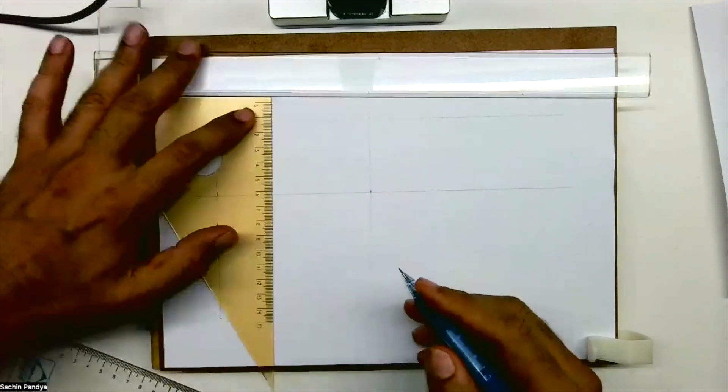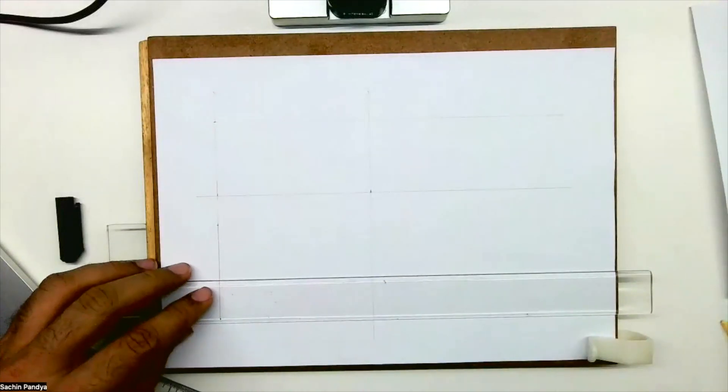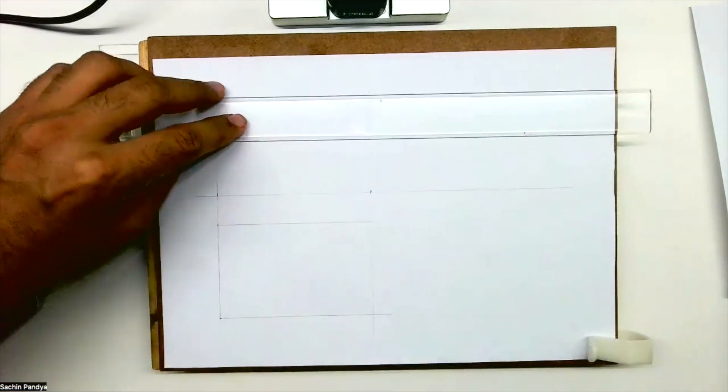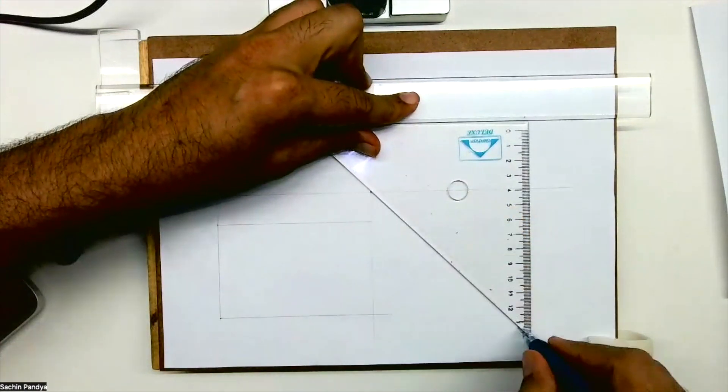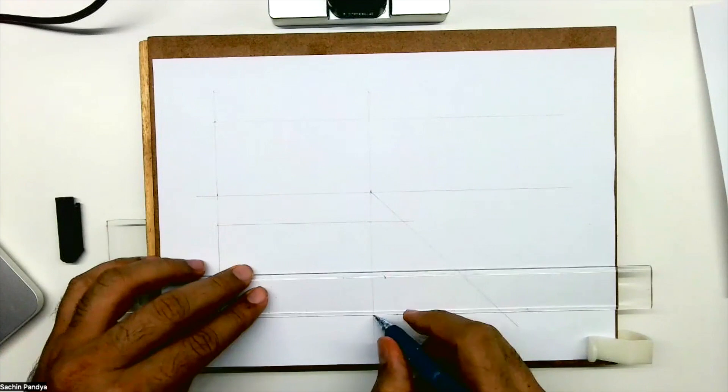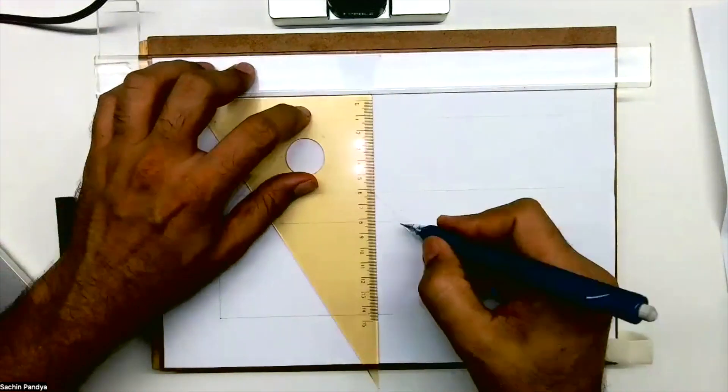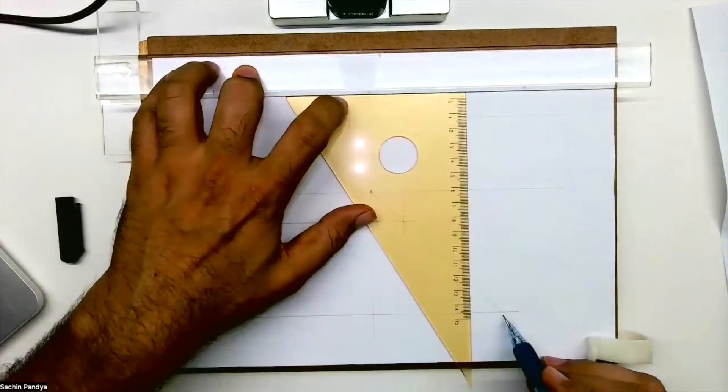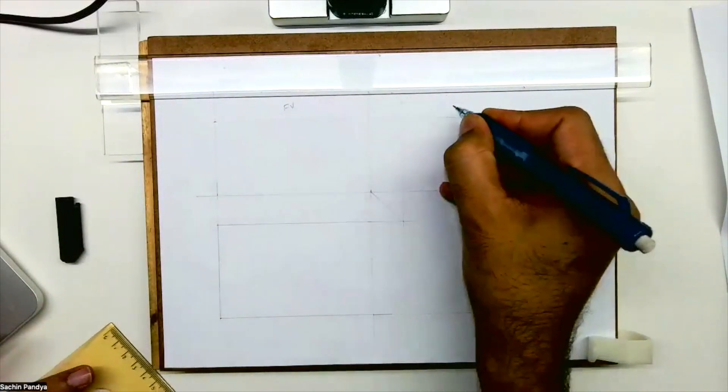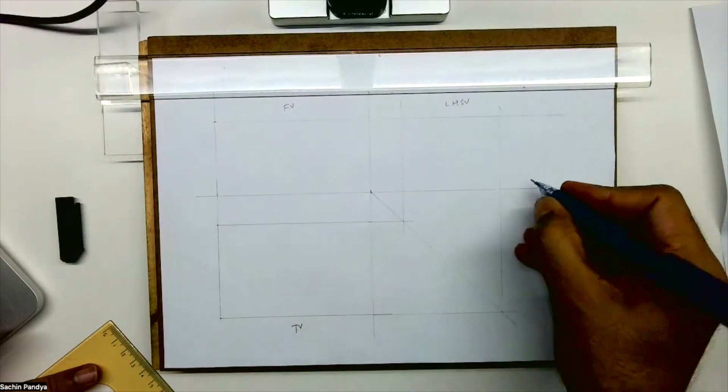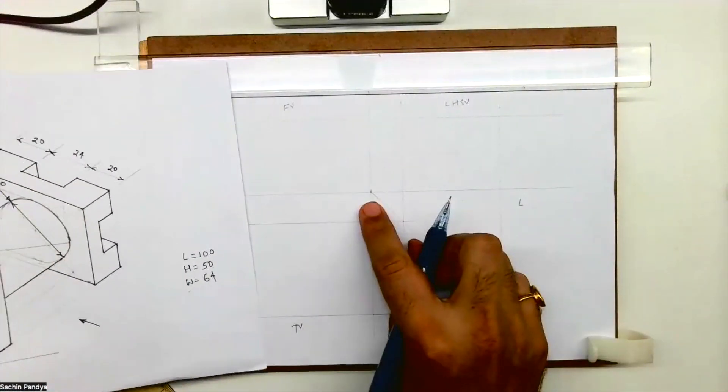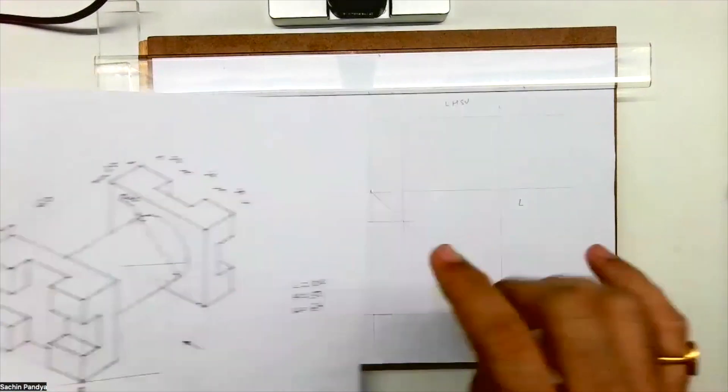I'll leave 20 between front view and top view, then width is 64. Now from here you draw 45 degrees, then extend from here. We are done with layout for first angle - that is front view, left-hand side view, and top view. Length is 100, height is 50, width is 64.